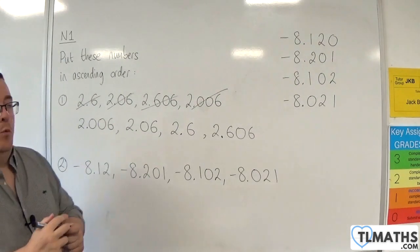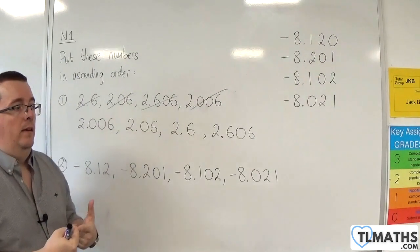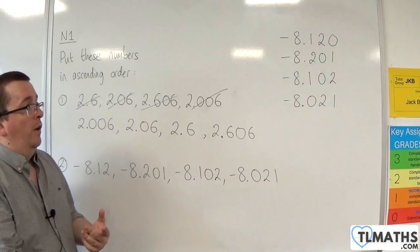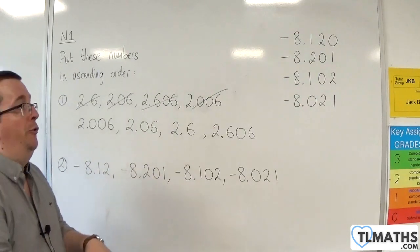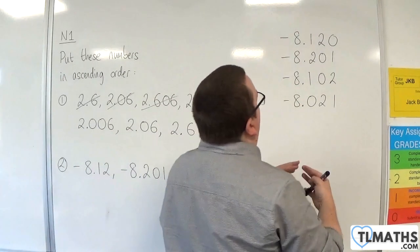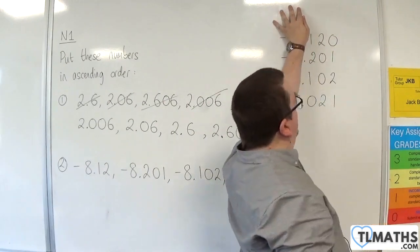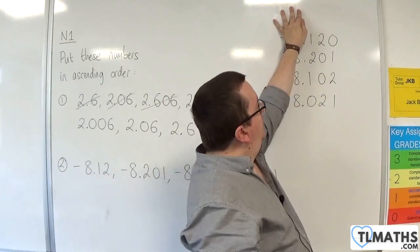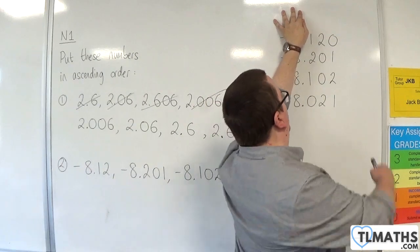Now, because we are working all with negatives here, the smallest will be the most negative. So I'm looking for, if I cover up my minus 8 and points, I'm looking for the largest one first,